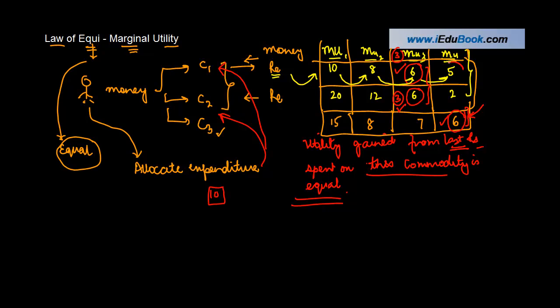Because if he spends 4 here, what will happen is that the marginal utility will go down. So he is in equilibrium when the last rupee spent on these commodities is giving him an equal utility.